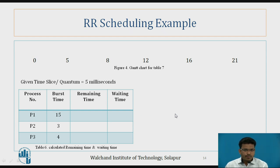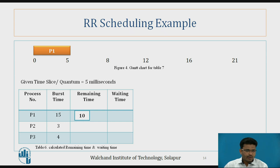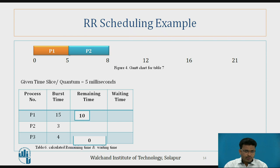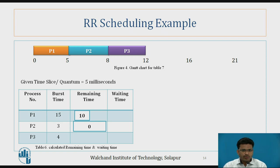P1 executes first for 5 milliseconds, leaving a remaining time of 10 milliseconds. Then P2 gets a chance to execute. P2's burst time is 3, which is less than the time quantum of 5, so P2 is completely executed and its remaining time is 0. Next, P3 executes — its burst time is also less than the time quantum, so P3 completes its task as well.